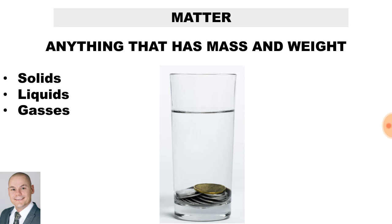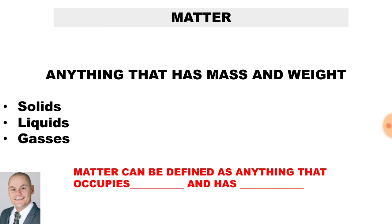What is matter? Matter is anything that has both mass and weight. It consists of solids, liquids and gases. Let's look at an exam type question: Matter can be defined as anything that occupies both space and has weight.